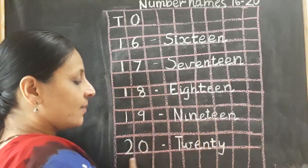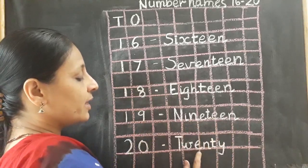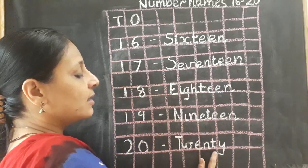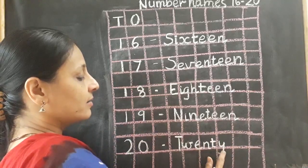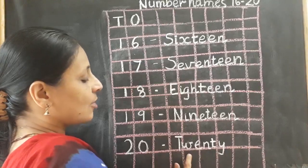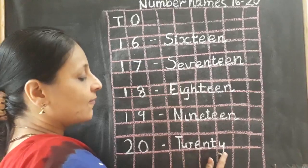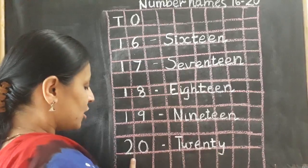20. T, W, E, N, T, Y. Twenty. Once again: T, W, E, N, T, Y. Twenty.